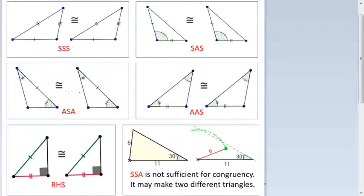For congruency, there are only these five tests: SAS, SSS, ASA, AAS, and RHS. These are the only five tests.